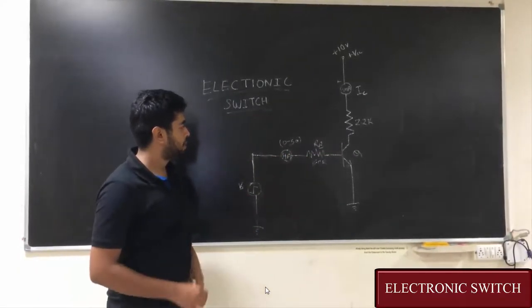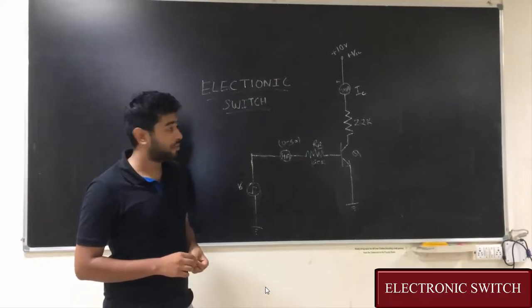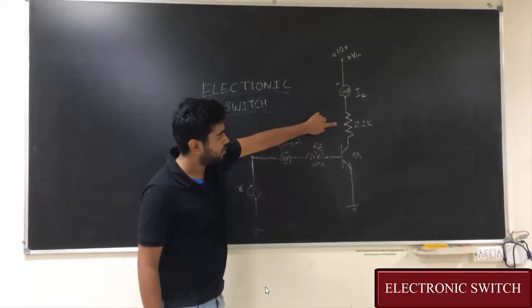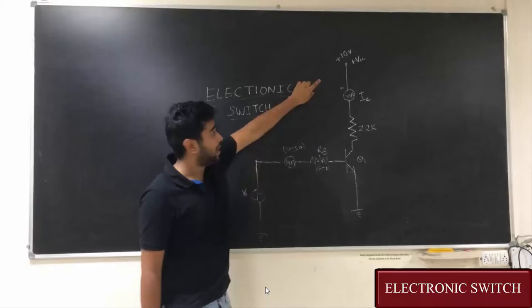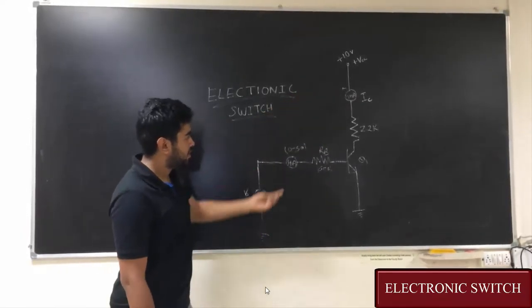There is a base resistor of value 150k and a collector resistor of value 2.2k. The supply given is 10V and this is how it works.